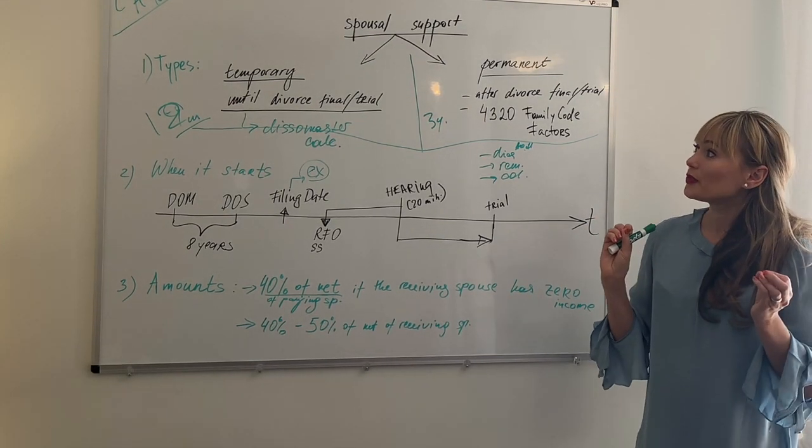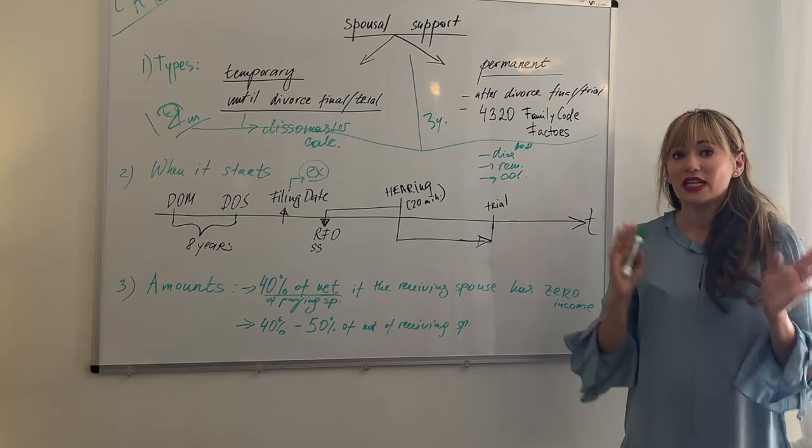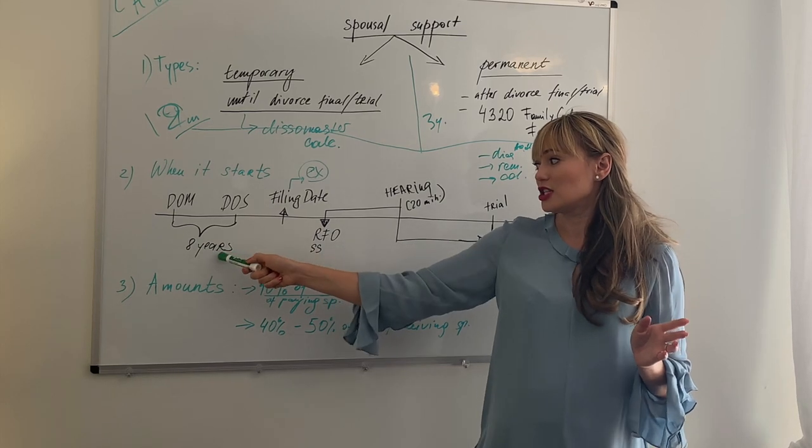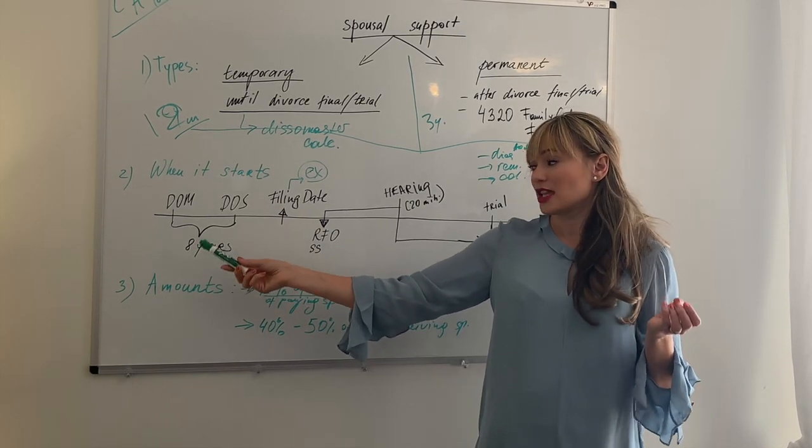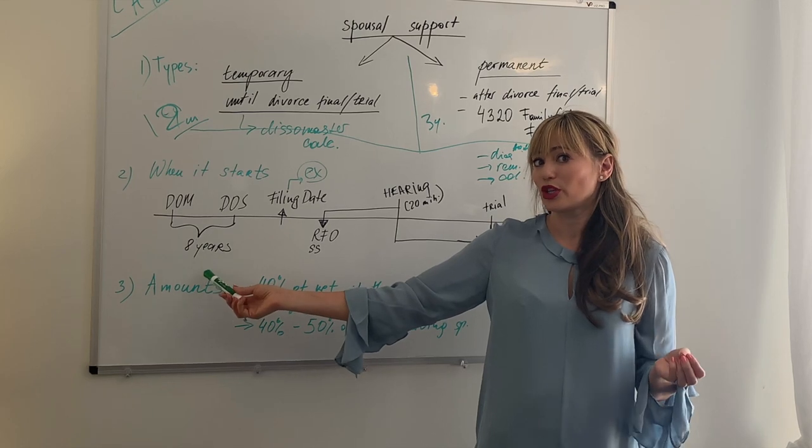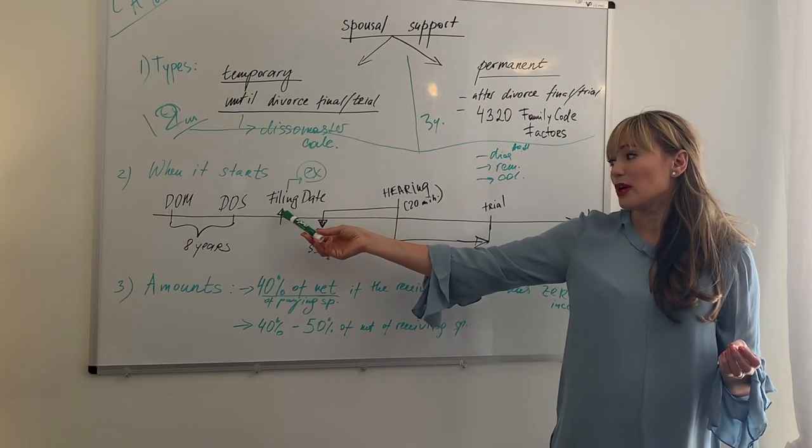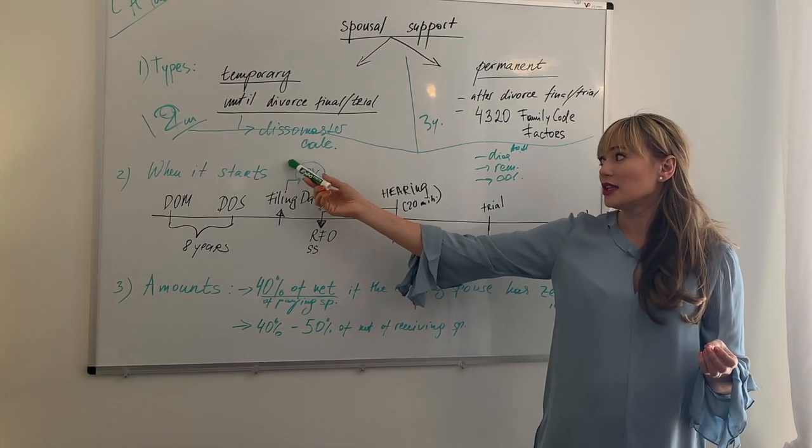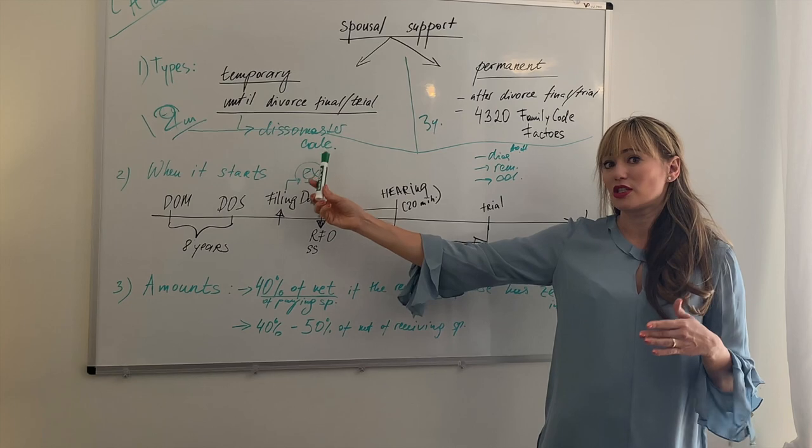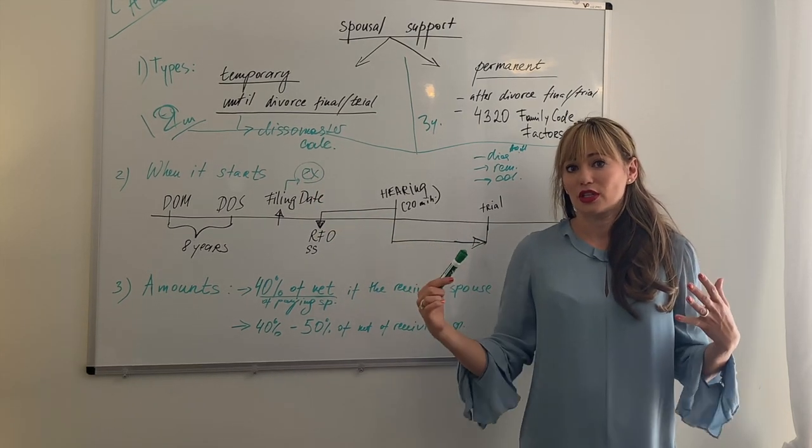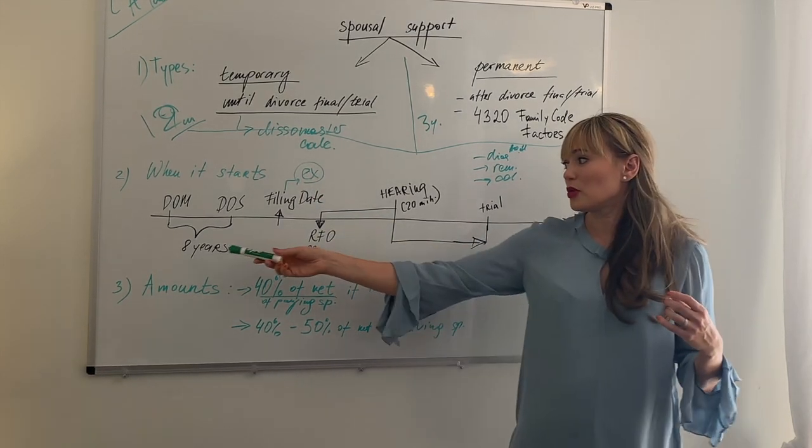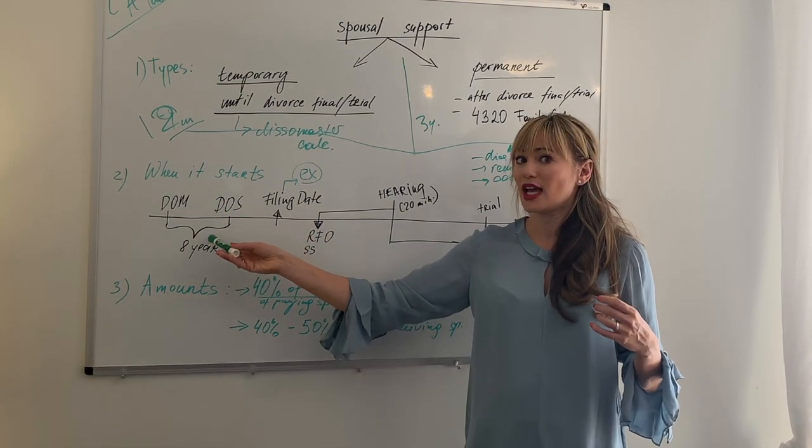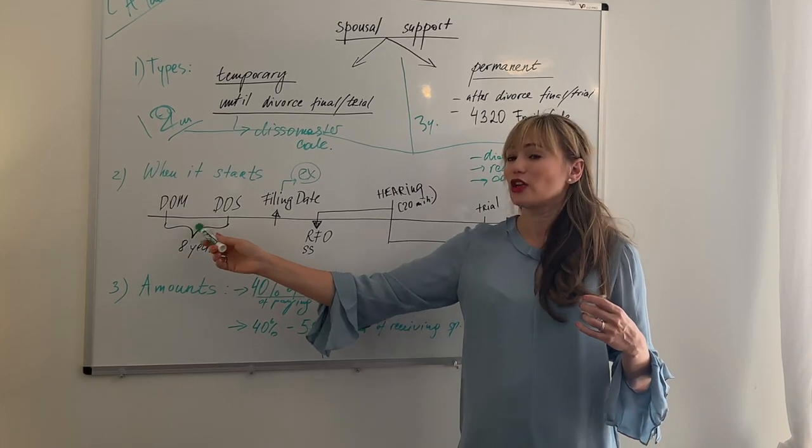So now let's say you have date of marriage which is here and you have date of separation which is here and the marriage is eight years. We've established that it's a shorter marriage and the length of spousal support would be four years. Then one spouse goes and files for divorce and gets a case number. Then the petition needs to be served so that way the court has jurisdiction. So remember we have eight years.